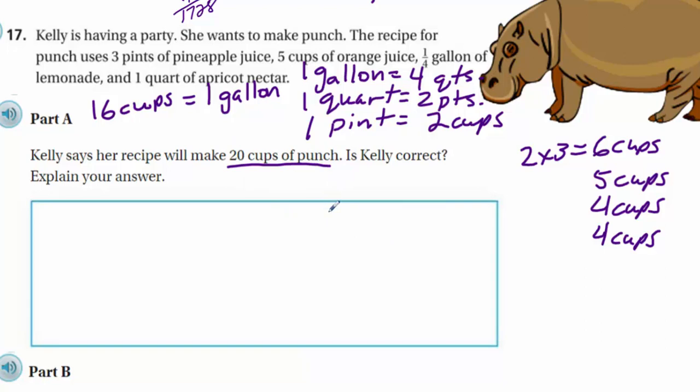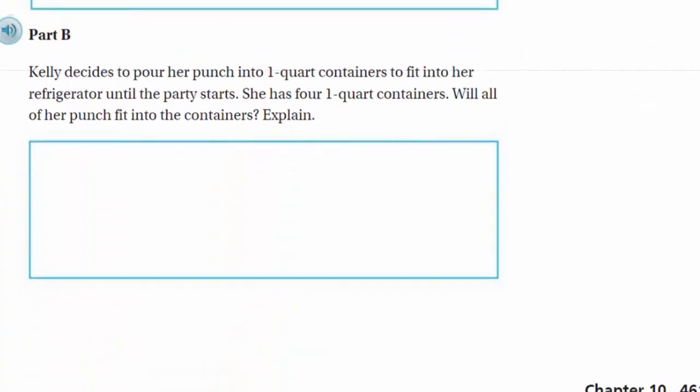Okay. The recipe will only make 19 cups of punch. You know, after I converted all those measurements to cups, remember? The 3 pints of pineapple juice was equal to 6 cups. We had the quarter gallon of lemonade, which was equal to 4 cups. We had the 1 quart of apricot nectar. That was 4 cups. So, when I added these all together, I got 19 cups. So, let me go ahead and put those notes down. Okay. Let's go, go, go.